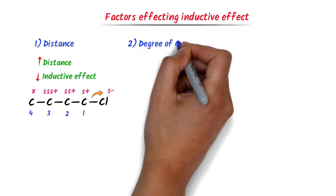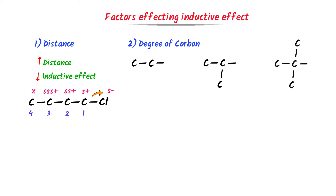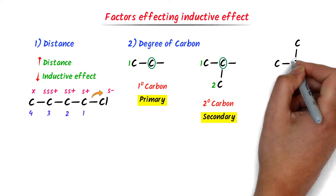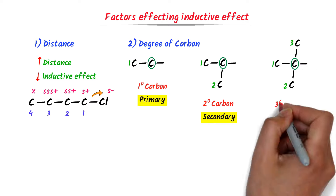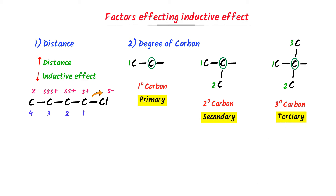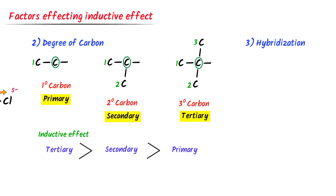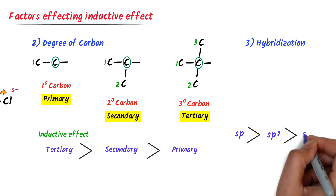Secondly, degree of carbon. For example, consider these compounds. This carbon is bonded to one carbon, so it is a primary carbon. This carbon is attached to two other carbons. Remember that the inductive effect of tertiary carbon is greater than that of secondary carbon, which is greater than that of primary carbon. Note down this order of increasing inductive effect. Thirdly, hybridization. The inductive effect of sp is more than sp2, which is more than sp3.